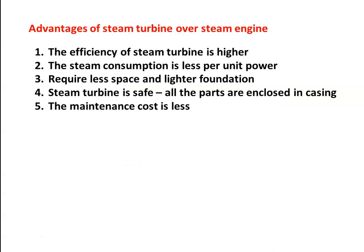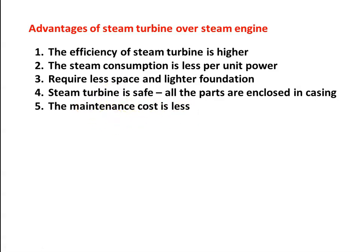The advantages of the steam turbine over the steam engine are: the efficiency of the steam turbine is higher; steam consumption per unit power is less. It requires lesser space and a lighter foundation because rotary machines produce no vibration, unlike reciprocating engines which require strong foundations. The steam turbine is safe because all parts — the rotor, nozzle, and everything — are enclosed in the casing. Maintenance cost is less because there is no reciprocating component.